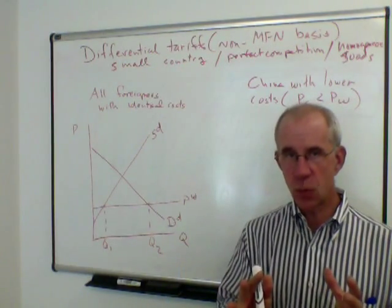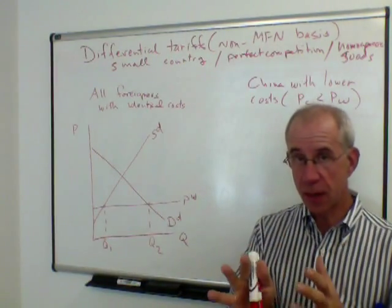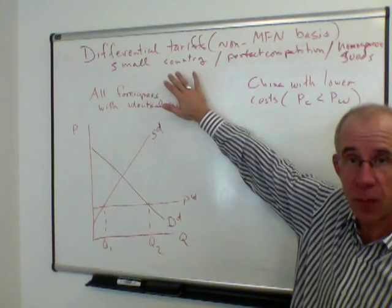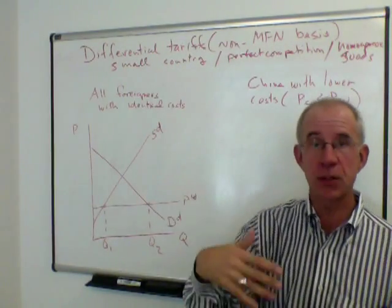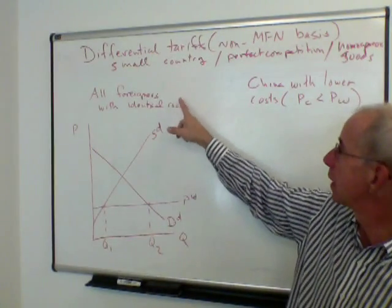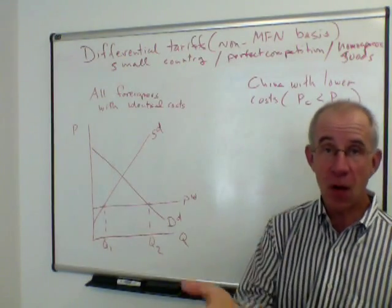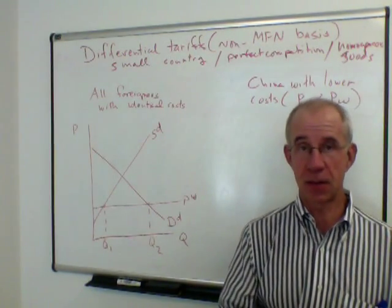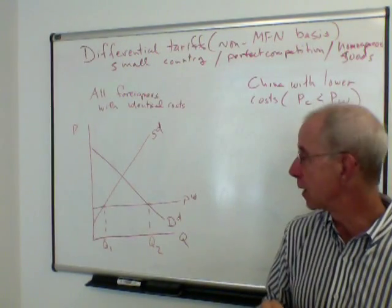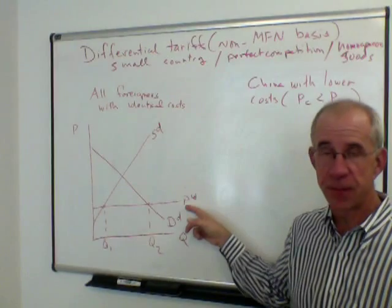Sometimes you may impose restrictions only on one country and not on others. We're going to analyze this in a simple framework with a small country, perfect competition, and homogeneous goods. First, we'll make the assumption that all foreigners have identical costs and that they all sell at the standard international price — so there's one world price for everybody.